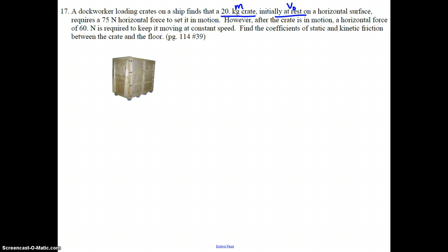It requires a 75 newton horizontal force to set it in motion. This 75 newton force is the amount of force required to just get it moving. This would be the static friction required to move the object, to just get it moving. However, after the crate is in motion, a horizontal force of 60 newtons is required to keep it moving at constant speed.